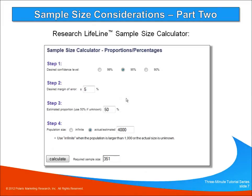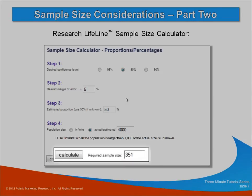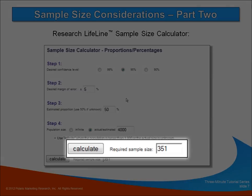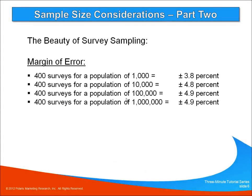For those parameters, the calculator says that I will need 351 completed surveys. Had I chosen infinite as my population estimate, the result would have been just about the same size — just to make my point that a large population size doesn't really factor.